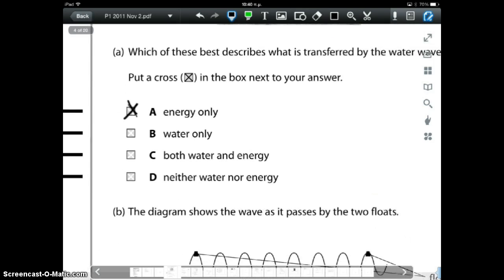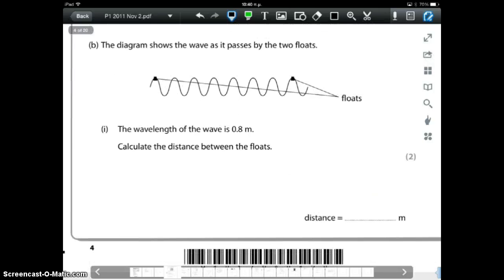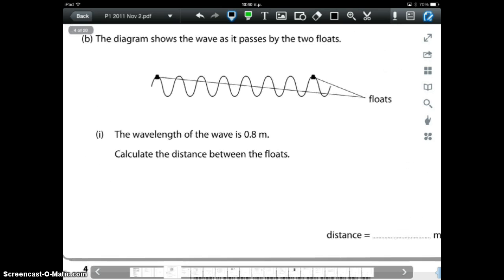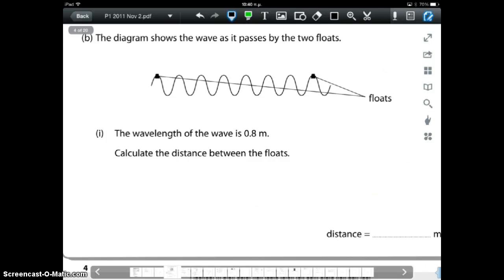Then B. The diagram shows the wave as it passes by two floats. The wavelength of the wave is 0.8 meters. Calculate the distance between the floats. Well here you need to remember two things. What is one complete wave? And secondly what is wavelength?